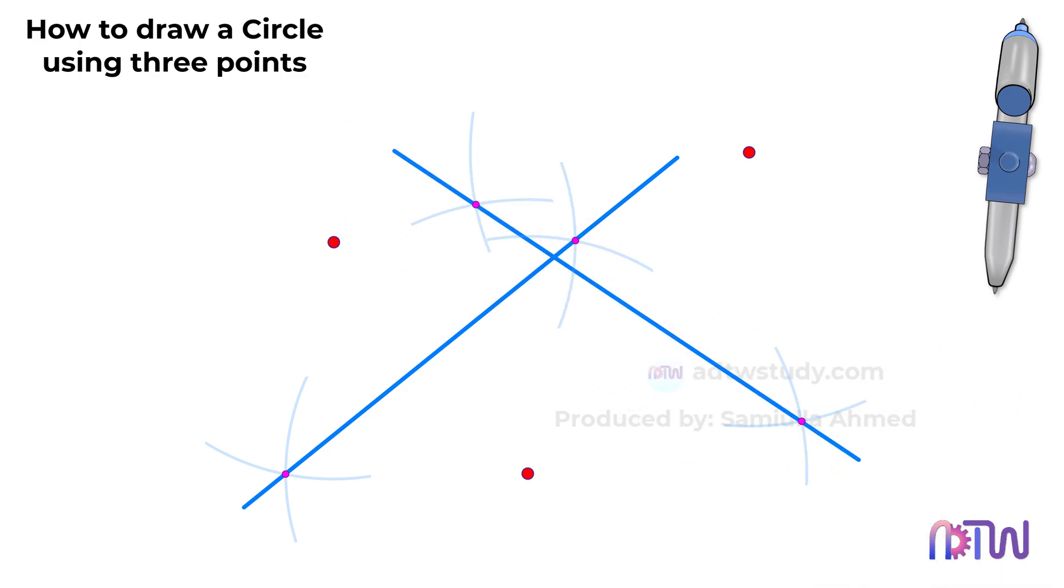Now we have these two perpendicular bisectors which intersect at this point. This point will be the center of the required circle that will pass through all three points.